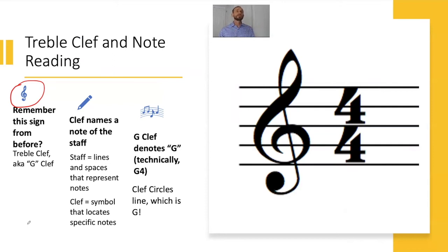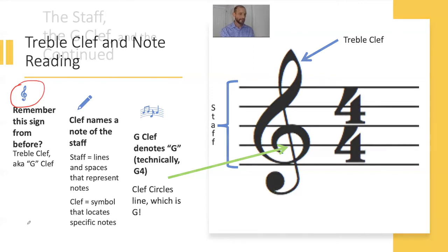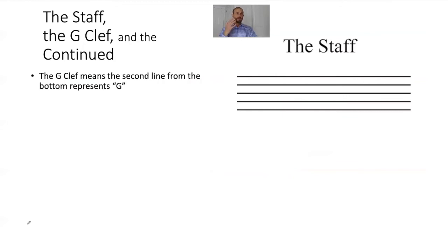Let's apply this knowledge to the treble clef and note reading. That highlighted sign is the treble clef, also known as the G clef. A clef names a note on the staff. The staff are the lines and spaces that represent notes. This is a common system for European art music. The clef is what locates a specific note to determine what those lines and spaces mean. The G clef denotes G, and technically it's G4. In the middle where that arrow points, it's a funny looking G that circles that second line. That is now labeled G.